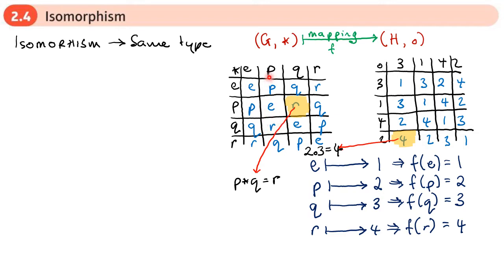Structurally, the second table is the same as the first, even though it doesn't look the same and the elements are in a slightly different order. Trying to find an isomorphism by matching up Cayley tables isn't the easiest method, since there may be other valid mappings. So we're going to look at another way of working out what elements in the first table match to what elements in the second.